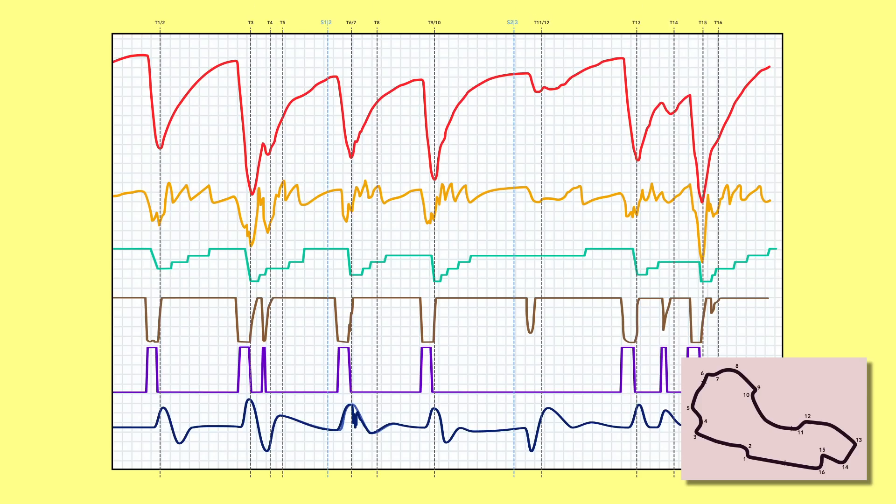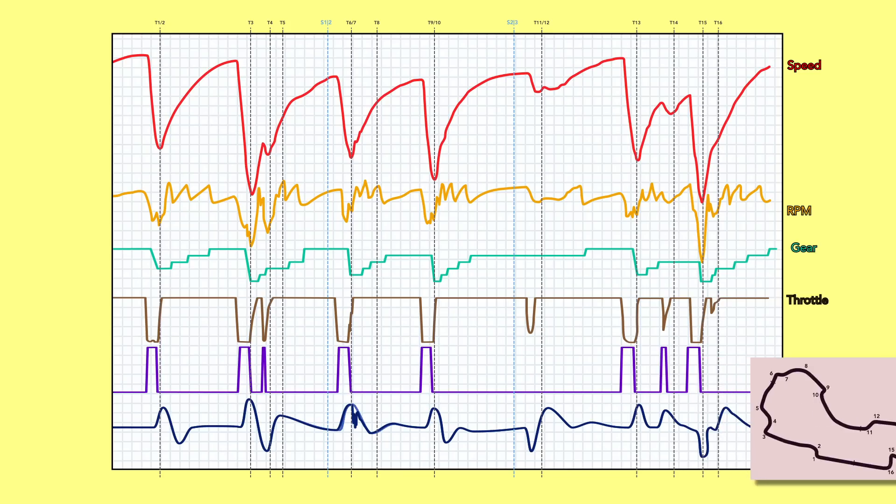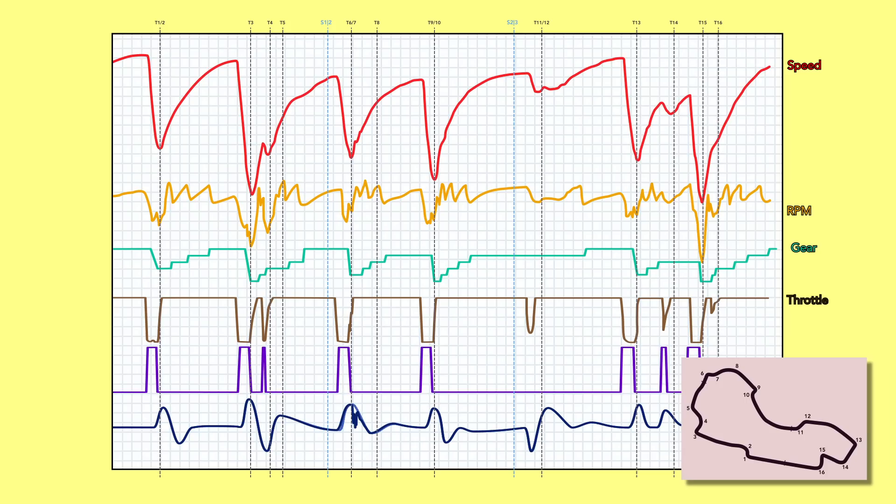So roll call then. We've got speed here in red, RPM here in orange, the gear we're in is here in some kind of aqua color, the throttle or accelerator pedal sits here in brown, the brake pedal pressure is marked in purple, and the steering wheel angle is this dark blue line here. I'll go into these more in a sec. On the telemetry, each graph line has its own color matching scale down the side so you can always look up the absolute values for what's going on.